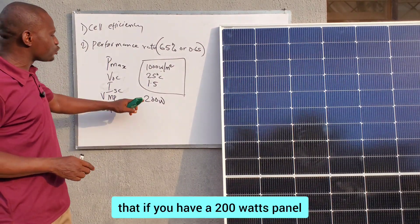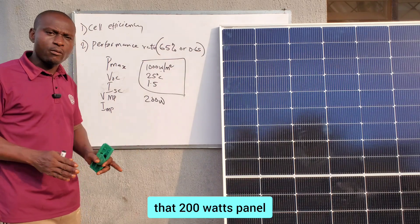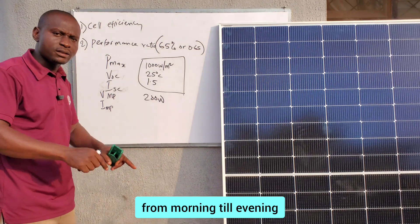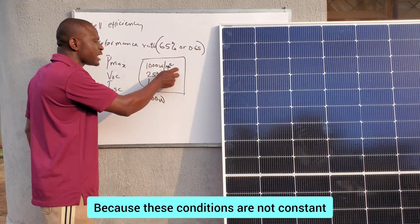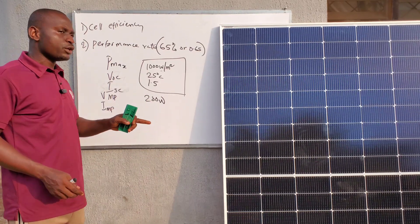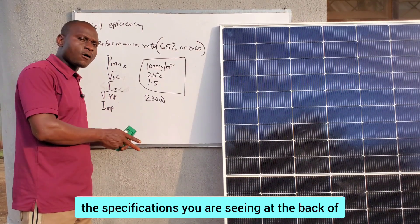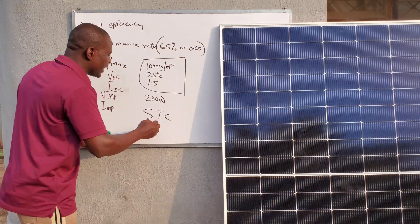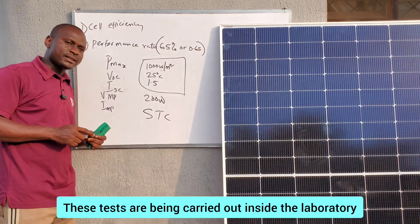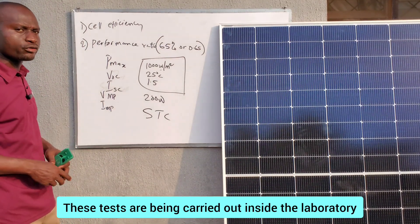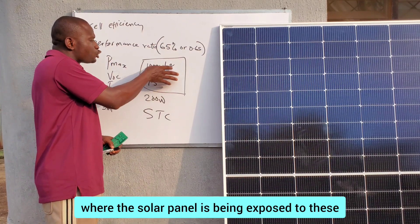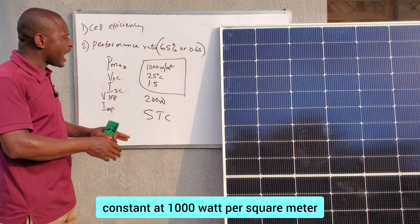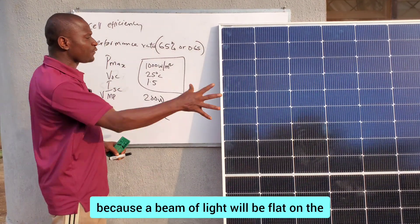Never think that if you have a 200-watt panel and you install it, it will be able to produce 200 watts of energy from morning to evening. It is a very big lie, because these conditions are not constant. The ratings and specifications you see at the back of that panel are taken under what we call STC — standard test conditions.